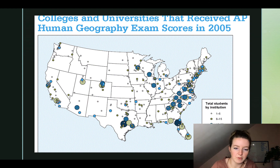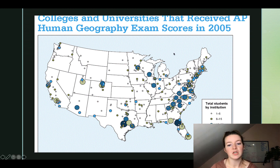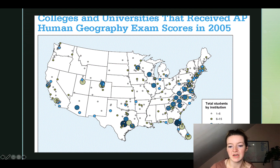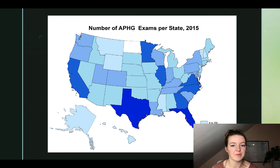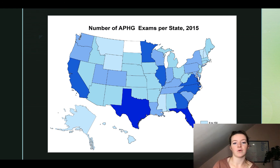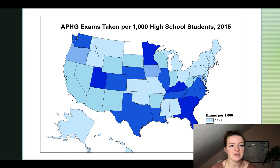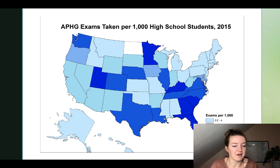This is a proportional symbol map showing colleges and universities that received AP Human Geography exam scores in 2005. Little tiny dots all over just mean the scores went to a different college or university. A state like Virginia has a whole bunch of differently sized dots, indicating many different universities that received AP Human Geography exam scores. Next, a choropleth map shows the number of AP Human Geography exams per state in 2015 — tell me the top two states. Finally, we're looking at AP Human Geography exams taken per 1,000 high school students in 2015, which is a little different from the previous map that just showed total exams taken.